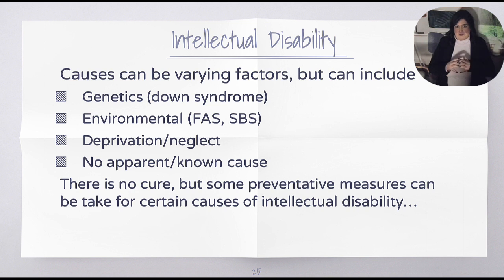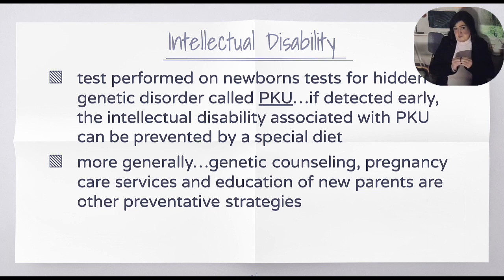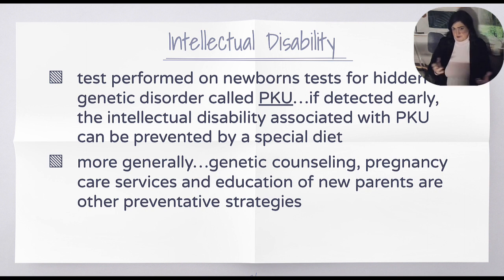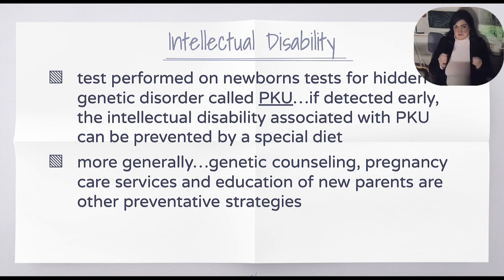There's no fixing intellectual disabilities, even when caused by something the parent does after the baby is born. However, there are some preventative measures for certain types. Tests can be performed on newborns and fetuses to find hidden genetic disorders like Down syndrome, or another fairly common one called PKU — a person's inability to process protein. If a child eats protein as in a normal diet, they can become intellectually or physically disabled. If detected early, the intellectual disability associated with PKU can be prevented by not eating protein. Therefore, having a special diet, genetic counseling, pregnancy care, services, and education offered to new parents is extremely important.